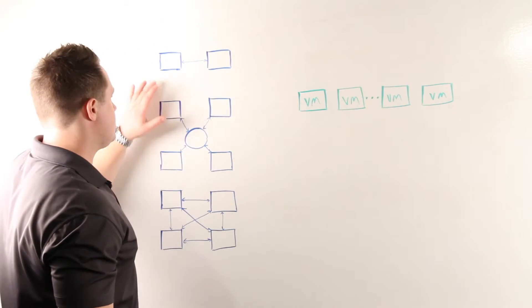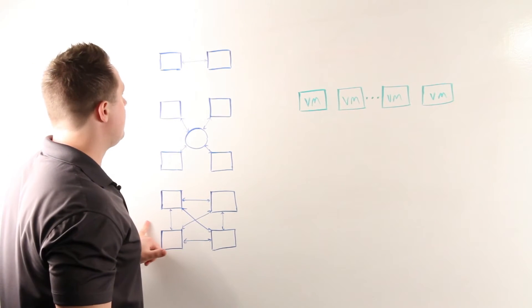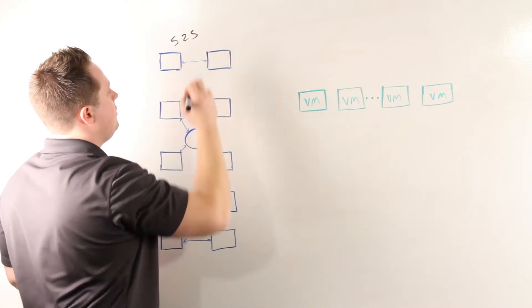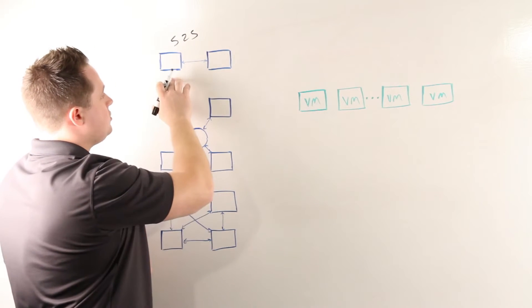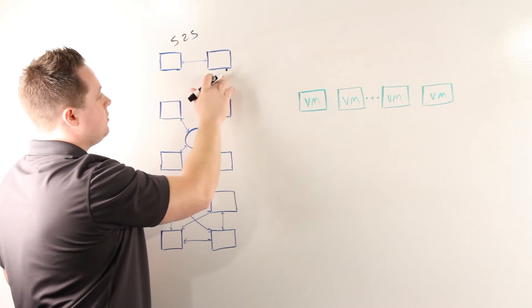If we look at the traditional replication topologies, there are really three main topologies that are very commonplace. The first is site-to-site or S2S, which is essentially two peers replicating to each other either one direction or bi-directionally.